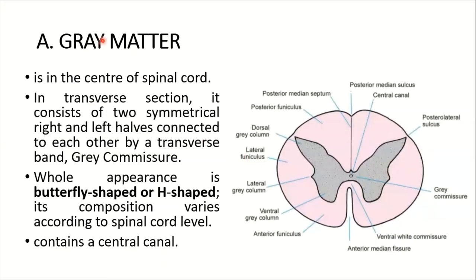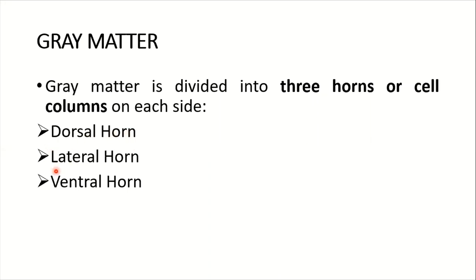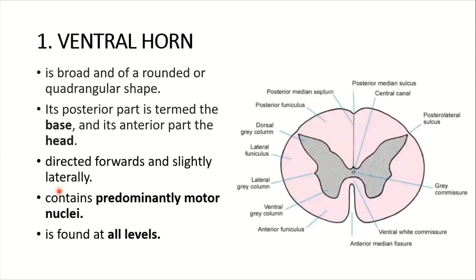The gray matter is in the center with two symmetrical right and left halves, connected by a transverse band called the gray commissure. The gray matter is divided into three horns: the dorsal horn, the lateral horn, and the ventral horn.